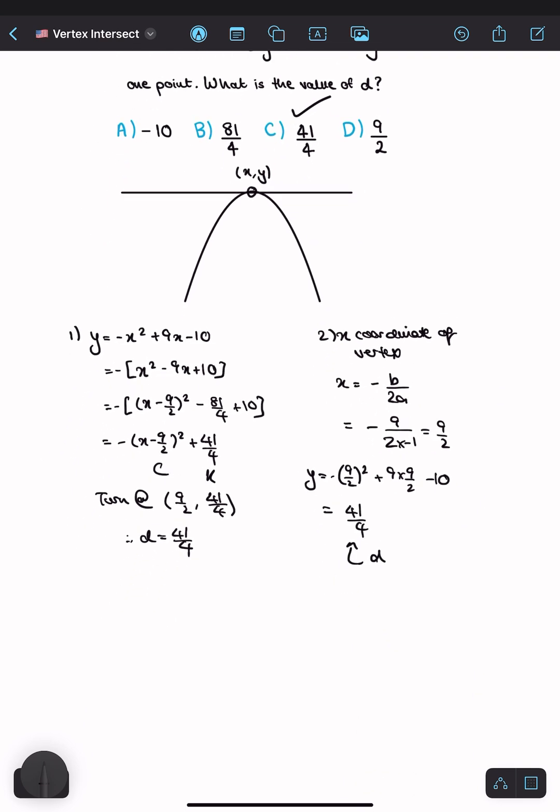The third method uses the discriminant. Setting the equations equal and rearranging gives -x² + 9x - 10 - d = 0. Since there's only one real solution, b² - 4ac must equal 0.